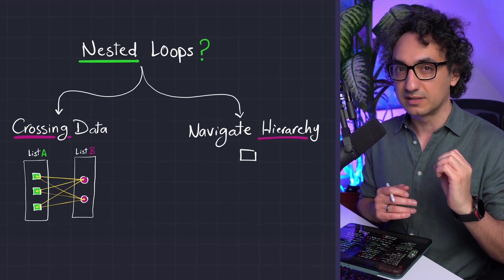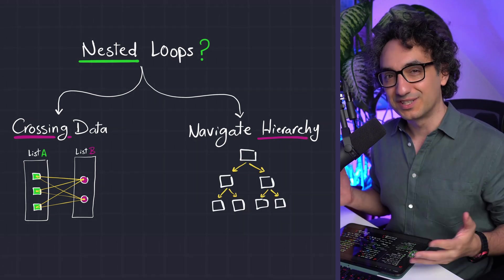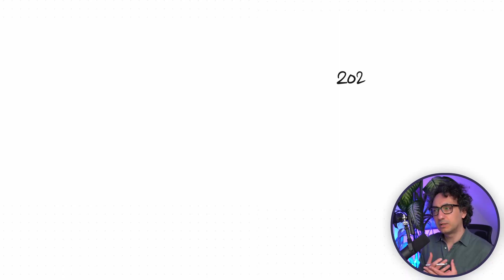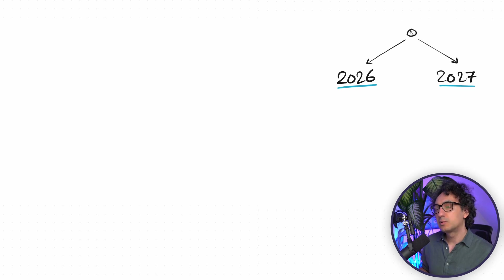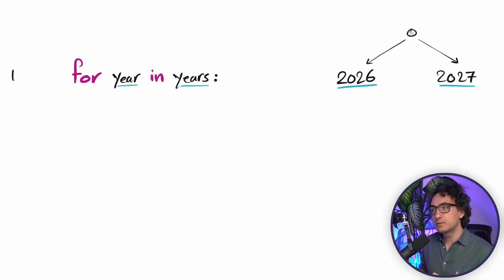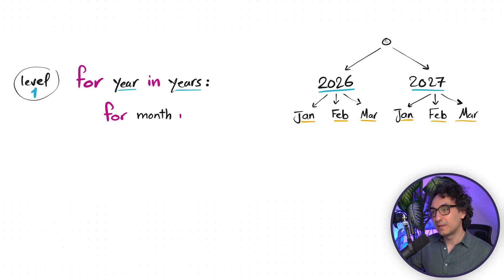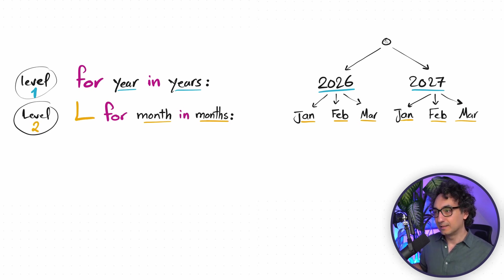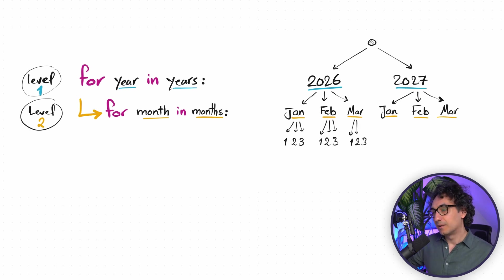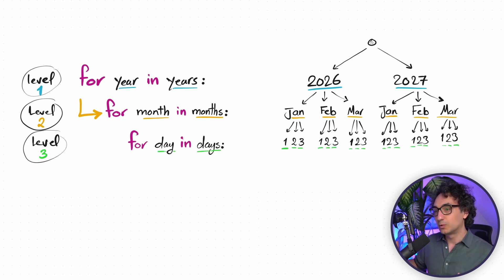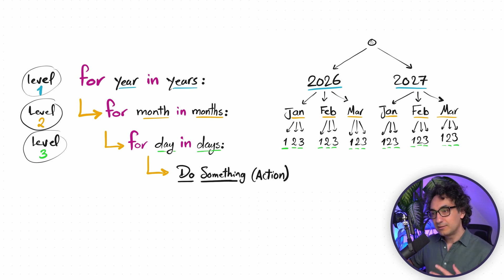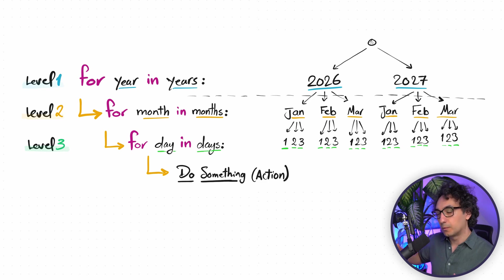The second and most important use case is navigating layers — drilling into hierarchy. For example, dates have hierarchy: we start with years, and we can drill down to months with another loop, then go deeper to days with a third loop. At the lowest level we do something with all three pieces of information. We use nested for loops to navigate through different layers of structure.